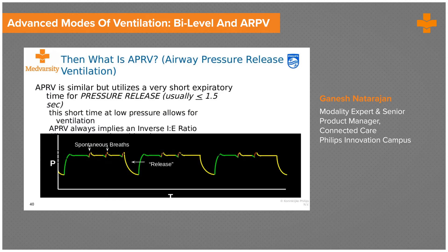Now let's move to another variant of BiPAP — this is called Airway Pressure Release Ventilation, or APRV. By nature it is extremely similar to BiPAP: you are ventilating on two pressures, a PEEP and an inspiratory pressure, and you have an active exhalation valve allowing unloading if the patient wants to breathe in the inspiratory phase. However, the key difference of APRV versus conventional BiPAP is that the I:E ratio is actually inversed — you have a far longer inspiratory cycle and a short, explosive expiratory cycle.